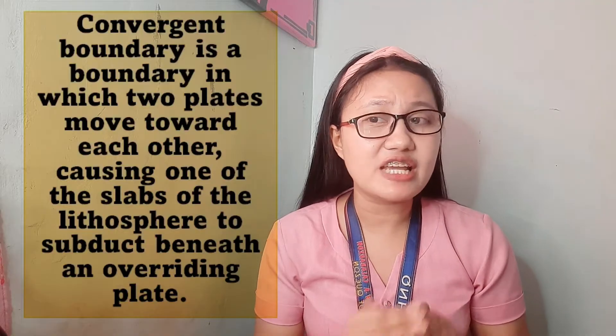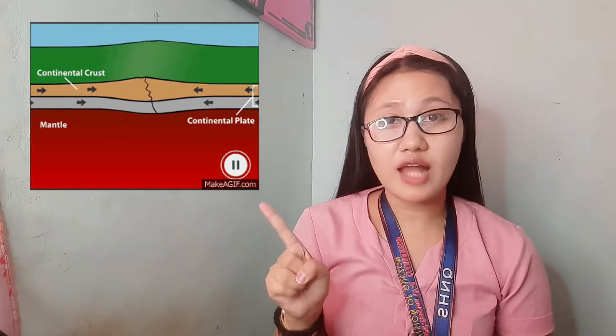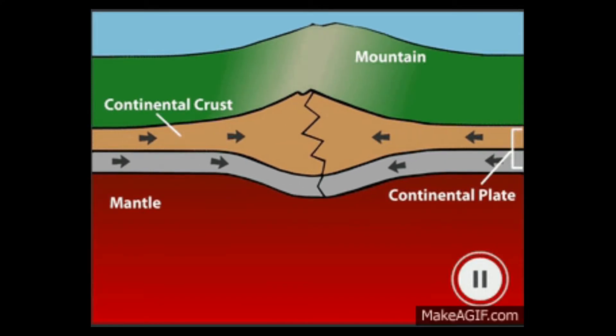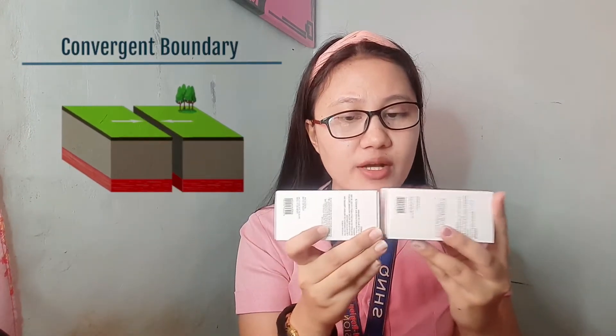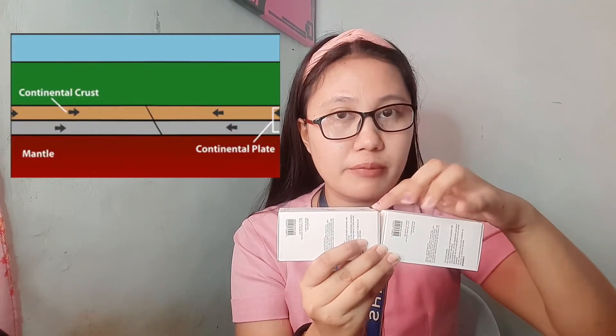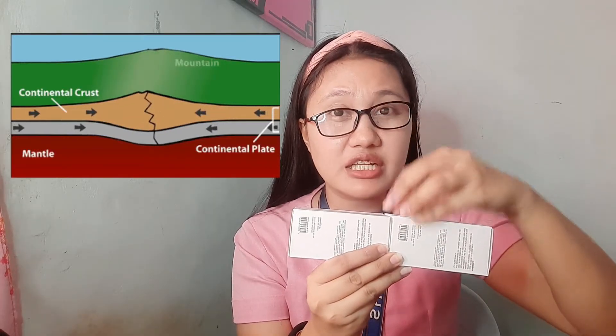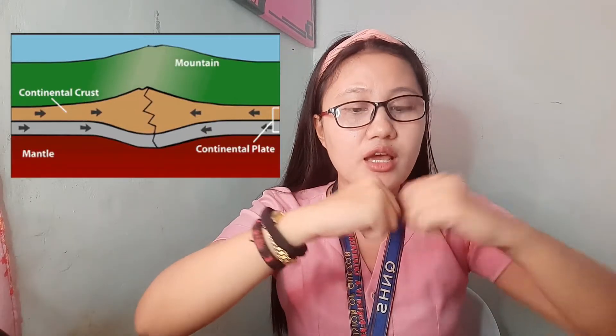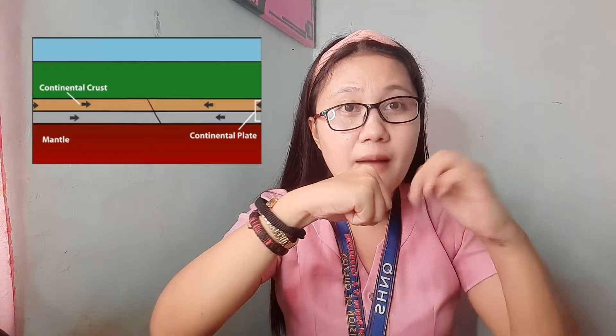At a convergent plate boundary, two plates come together — they collide. As they collide, there is a tendency for the edges of each plate to buckle up, which is why mountain ranges form. The tendency is that something rises up slightly, creating mountain ranges.